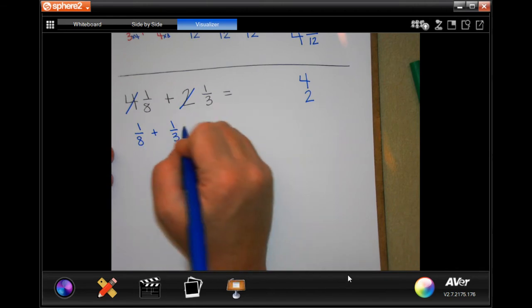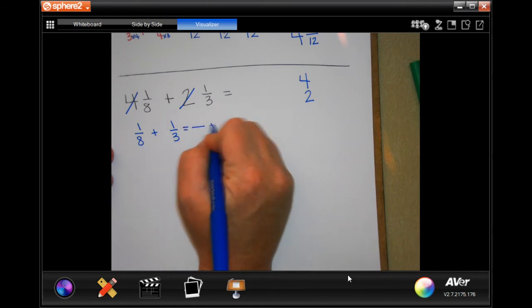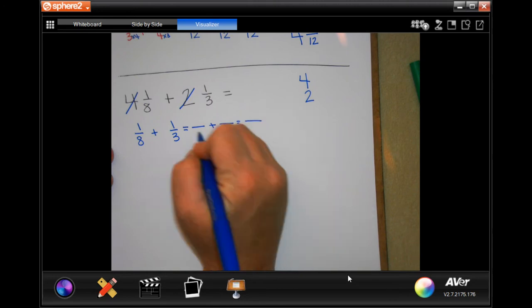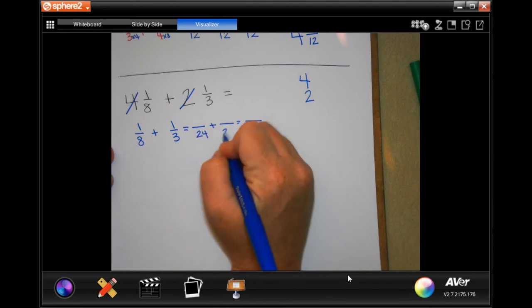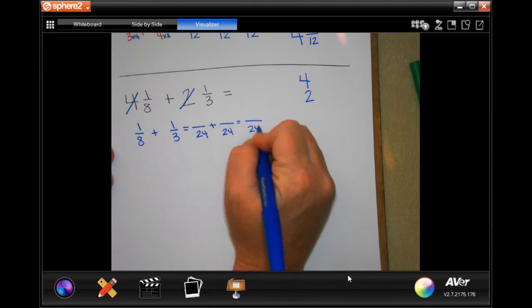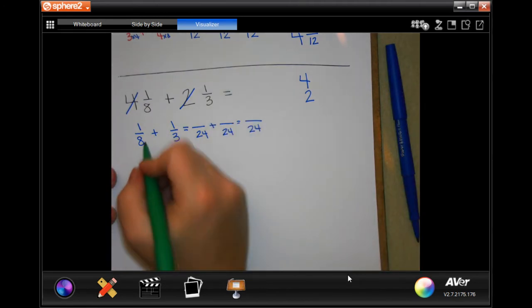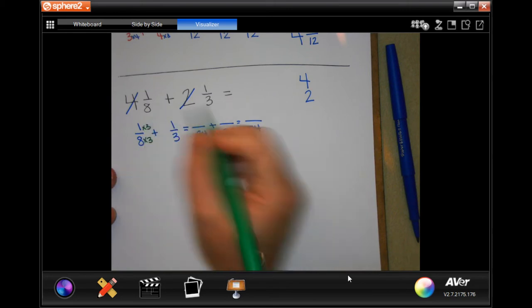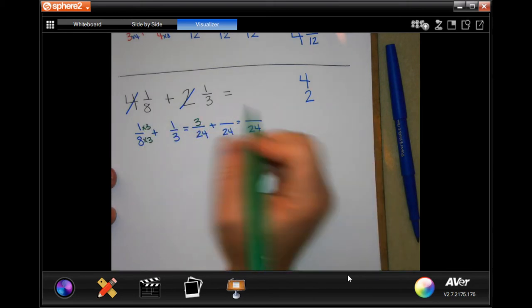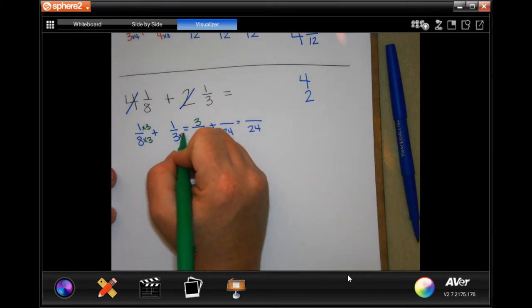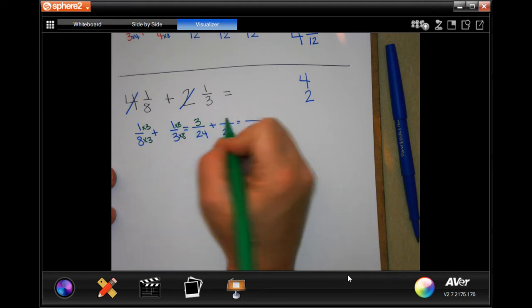Smallest number 8 and 3 both going to is 24. Now 24 goes all the way across. 8, I had to multiply by 3 to get to 24. So when I multiply the top, I get 3. 3, I had to multiply by 8, multiply the top by 8, and I get 8.